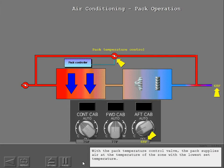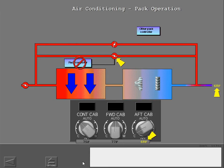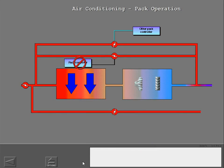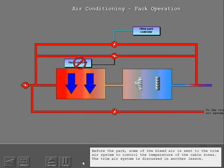With the pack temperature control valve, the pack supplies air at the temperature of the zone with the lowest set temperature. If the main controller or valve fails, the opposite pack controller uses the standby pack temperature controller. Before the pack, some of the bleed air is sent to the trim air system to control the temperature of the cabin zones. The trim air system is discussed in another lesson.